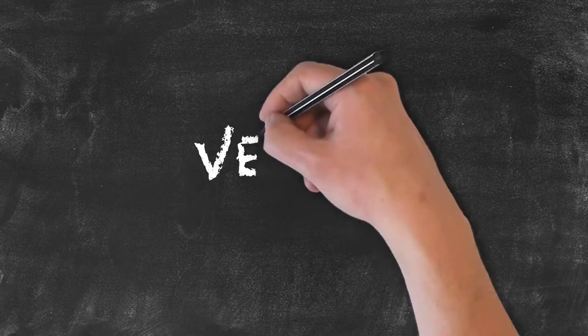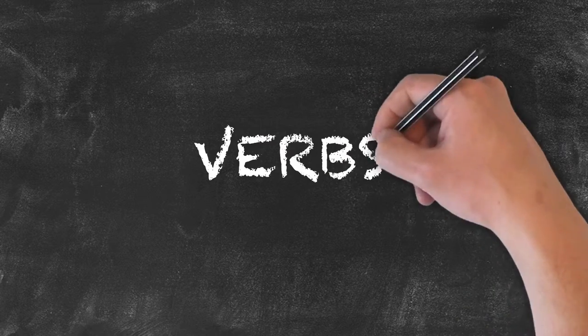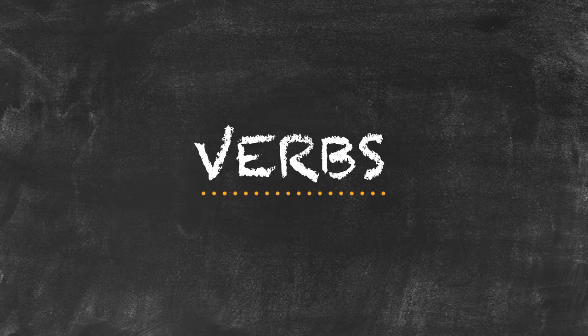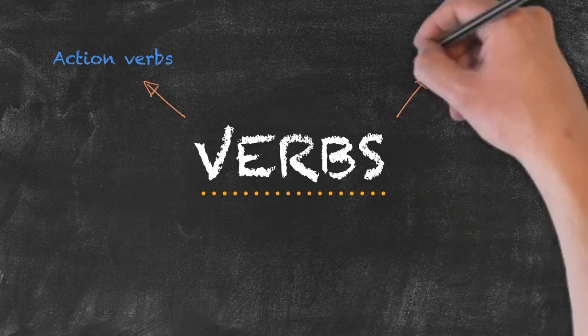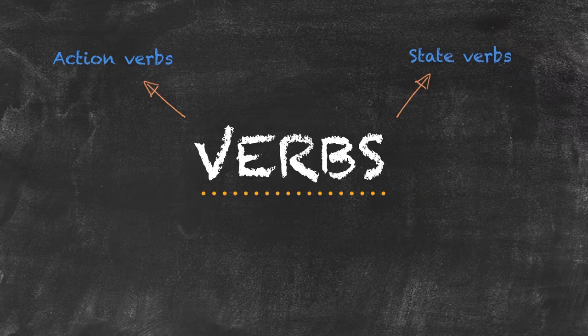Moving down our list of parts of speech, we have our verbs. The first big difference between verbs that we need to look at is whether it's an action verb or a state verb.